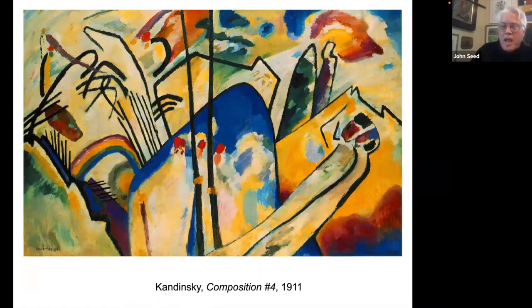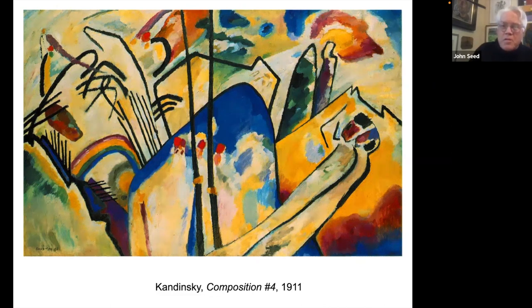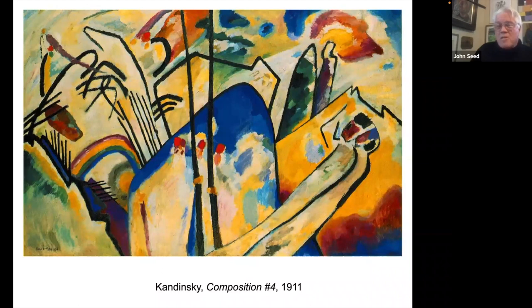Kandinsky, on the other hand, did make paintings — you can see here in his Composition Number Four — that had elements that symbolized, more than represented, landscape imagery. In this series of Blue Rider paintings you often see a tiny rider on a horse, forms that seem to represent roads, trees, or hills, and there's definitely a rainbow. So what's the difference between Picasso and Kandinsky — which one is more or less abstract? Well, Kandinsky claimed it. He was working towards abstraction and saw himself as an abstract painter.